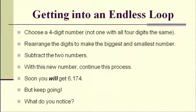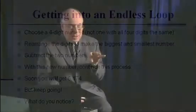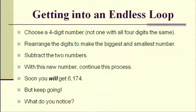Choose any four-digit number — not one with all the same digits, like 5555. Take those four digits and rearrange them to make the largest number and the smallest number, then subtract the smaller from the larger. With this new four-digit number, do the same thing again: make the largest and smallest arrangements and subtract. If you have a zero at the beginning or end, don't lose it — you need it. Eventually, you will get to 6174.